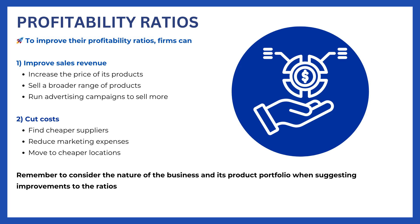To improve the firm's profitability ratios, the focus is all about improving profit before interest and tax. This means the firm should look at ways to either improve its revenue — such as through changing its price or increasing quantity sold — or ways to reduce its cost of sales, like sourcing from a cheaper supplier, or reduce expenses such as marketing or rental costs by moving to a cheaper location. Any strategy related to revenues, cost of sales, or expenses would be considered appropriate as long as you contextualize it and link it to case information.